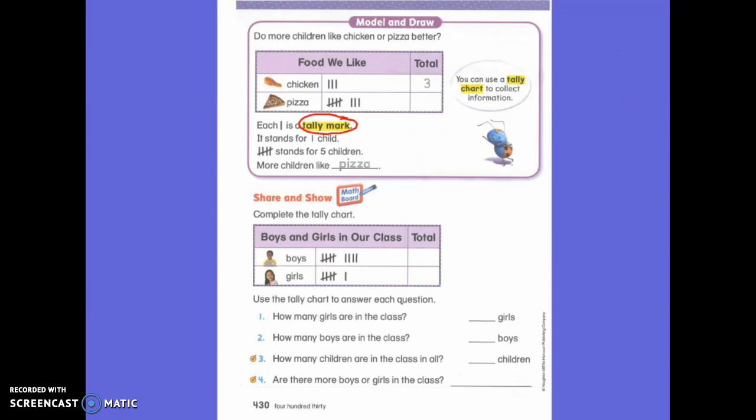So that's what we're going to be talking about today is the tally mark. Now, remember, when we do a tally mark, we do one, two, three, four, and then we cross with the fifth one.